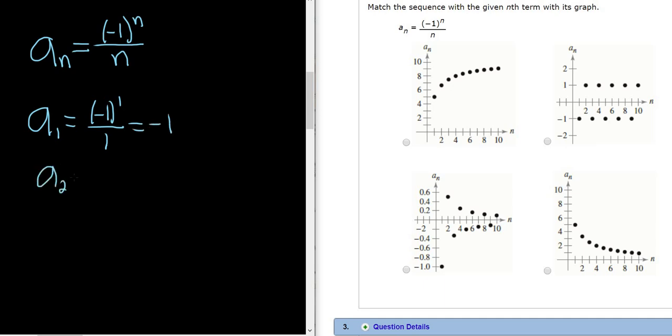A sub 2, replacing all of the n's with 2's. We get negative 1 squared over 2. So negative 1 squared is 1 because negative 1 to an even power is always 1. So we get 1 half.